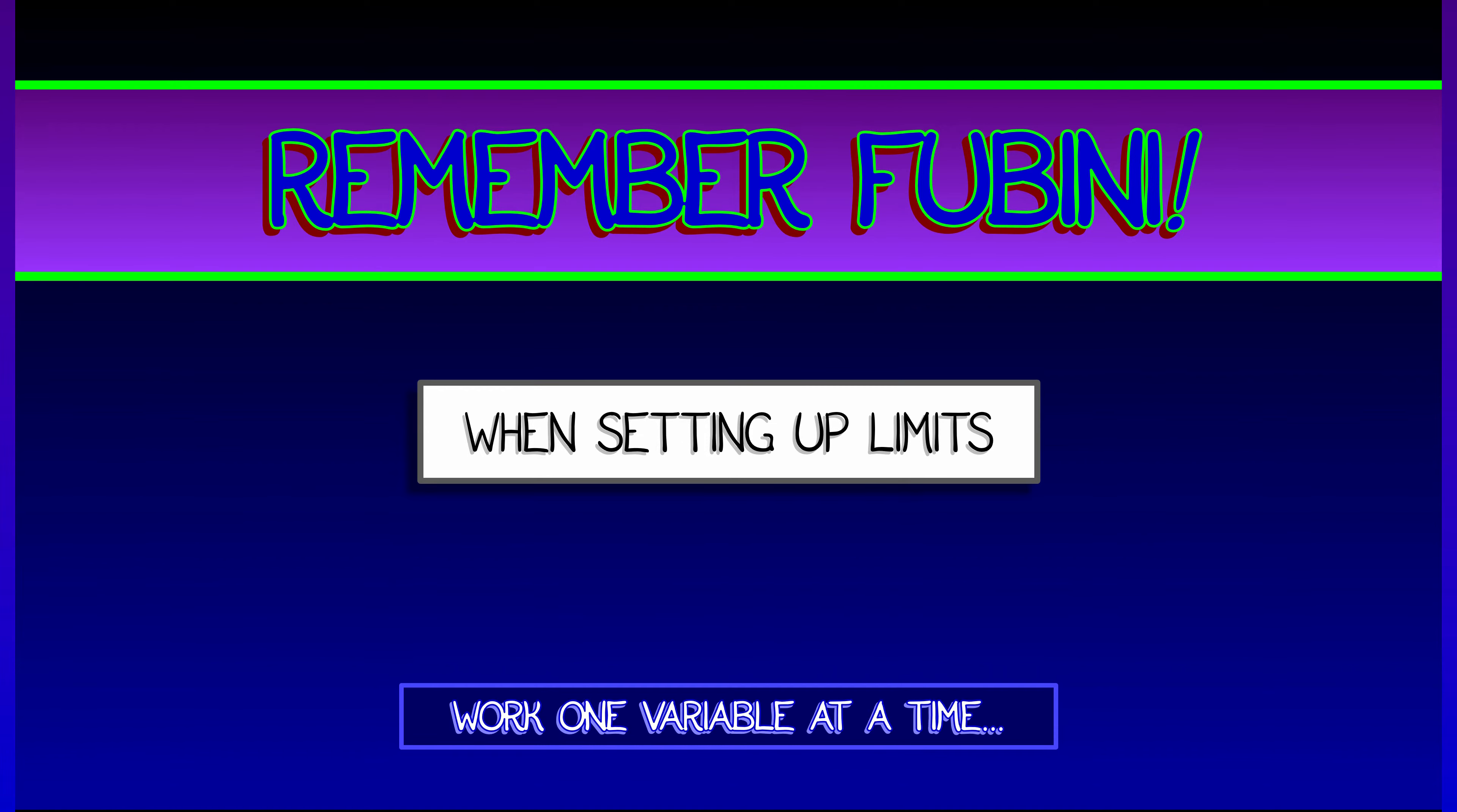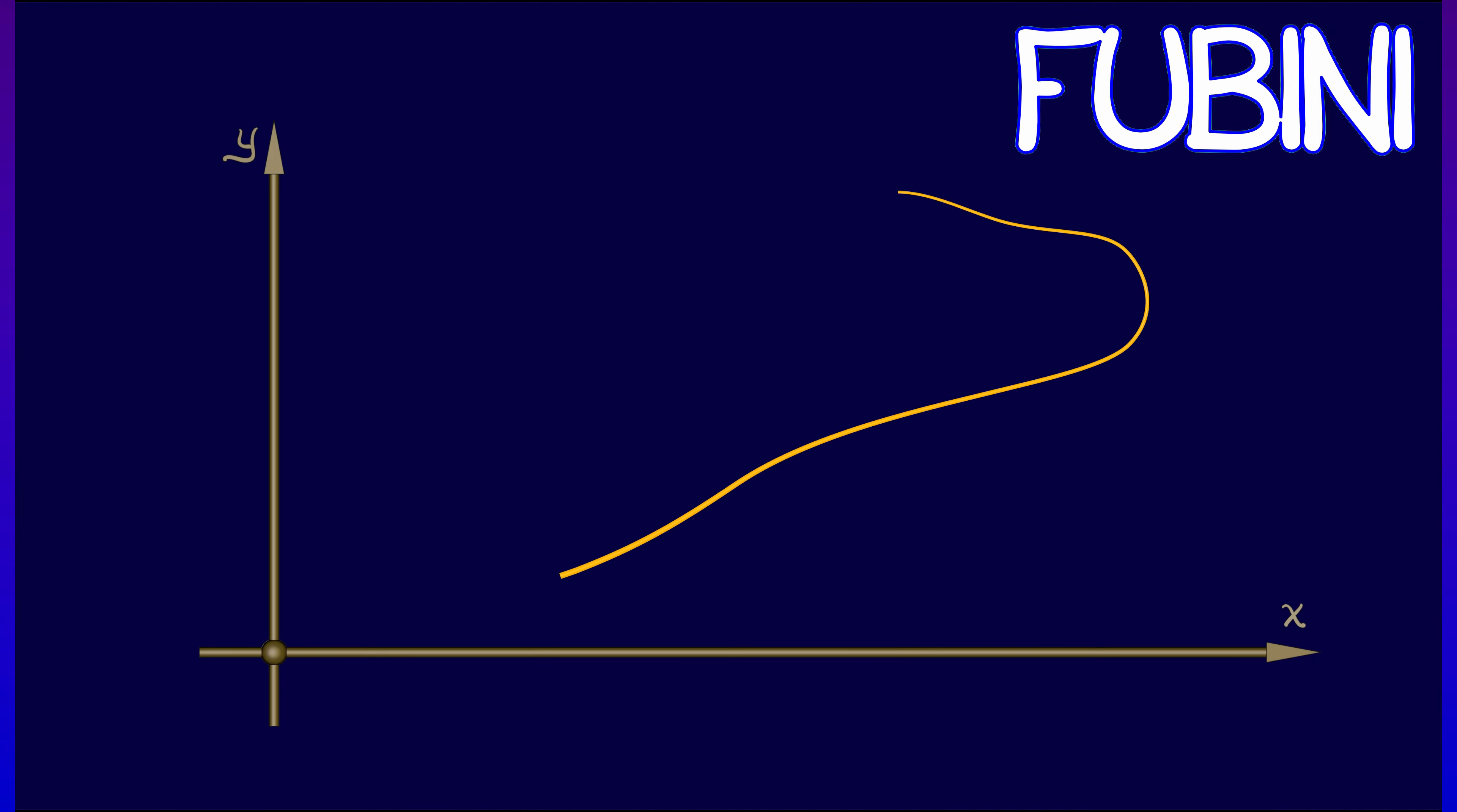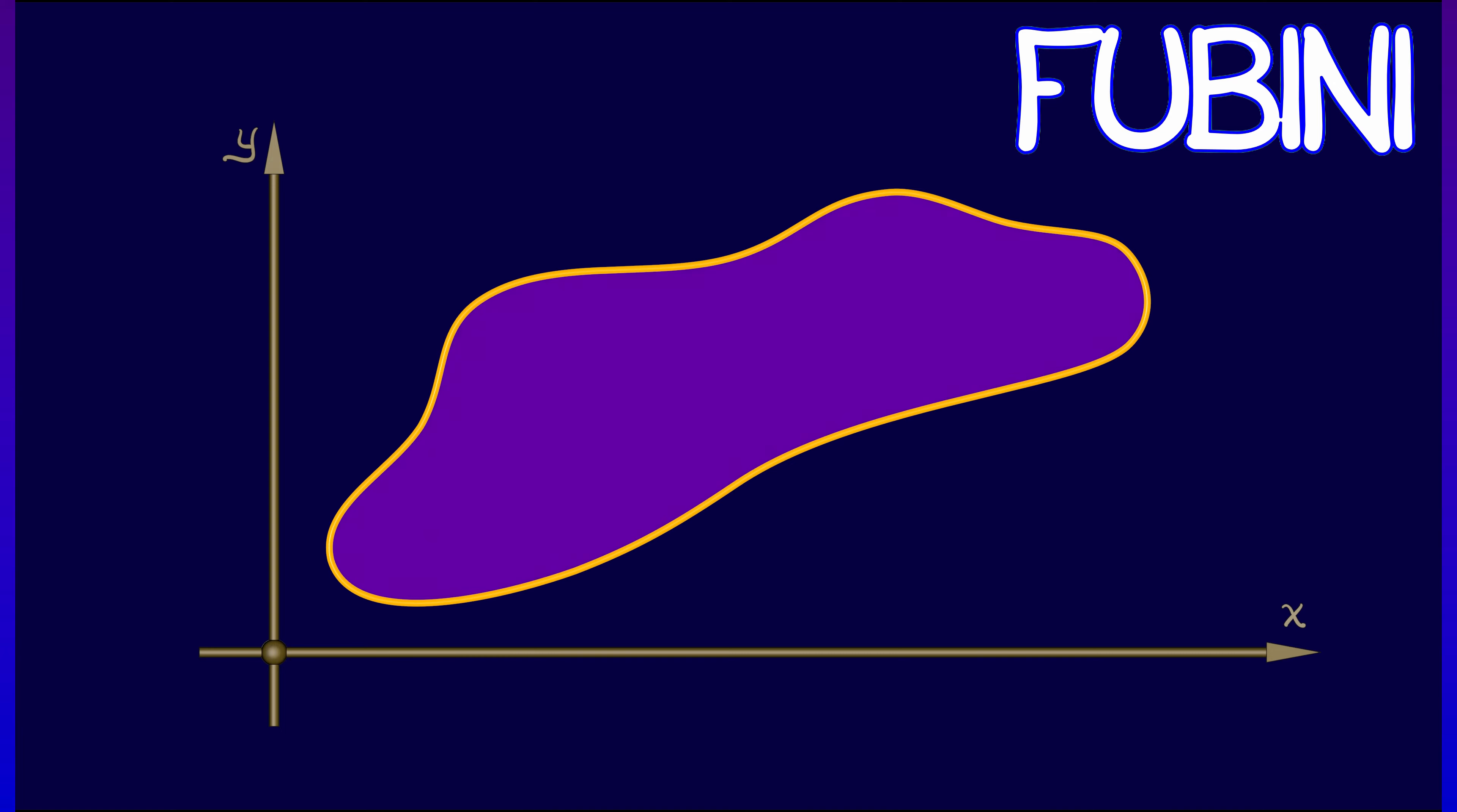We simply work one variable at a time, and remember how this goes. In the Fubini theorem, you take your region r and you say, let's say I fix x first and then I integrate in the y direction.